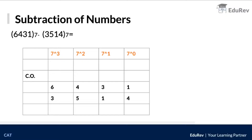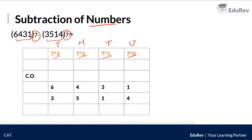Welcome to EduRev. Now let's look at the first concept: subtraction of numbers. We have two four-digit numbers, but the base is seven — not ten — so this is not the decimal system. I have written down the place values as seven raised to zero, seven raised to one, seven squared, and seven cubed, representing the units, tens, hundreds, and thousands places.